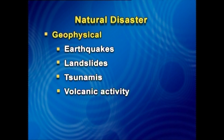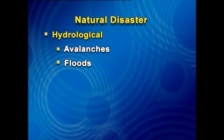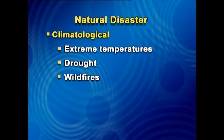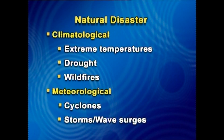Natural disaster is a naturally occurring physical phenomenon which can be geophysical — earthquakes, landslides, tsunami and volcanic activity; hydrological — avalanches and floods; climatological — extreme temperature, drought, and wildfires; or meteorological — cyclones and storms, wave surges.